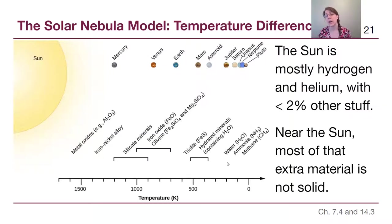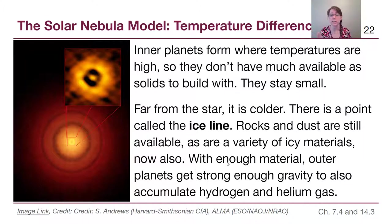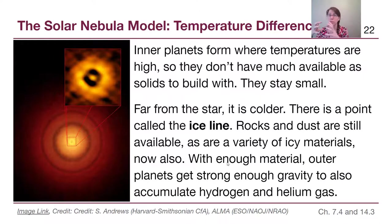The inner planets formed at temperatures too hot to have water and other ices available as building blocks. The outer four planets had more building blocks available. There's a point called the ice line, somewhere between Mars and Jupiter, where temperatures are cold enough that both rock and ices are available. More building blocks means bigger objects.